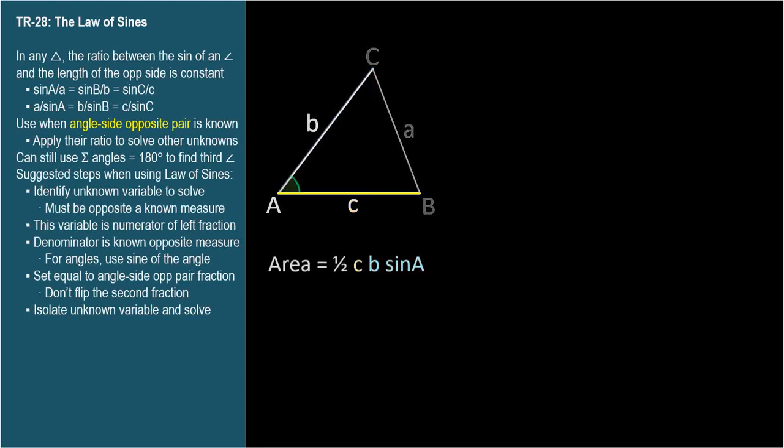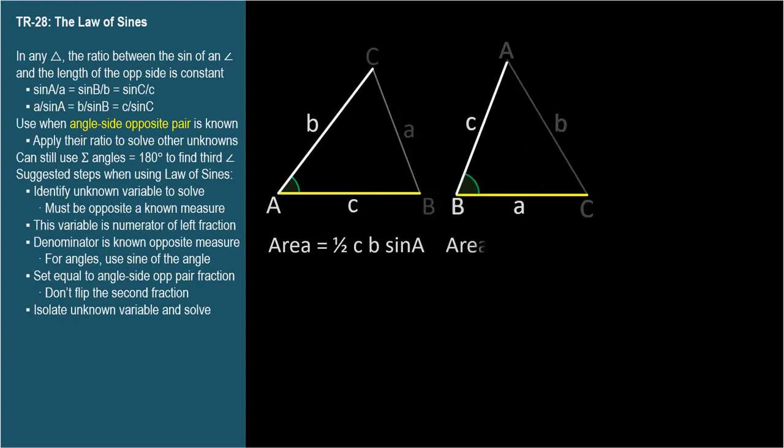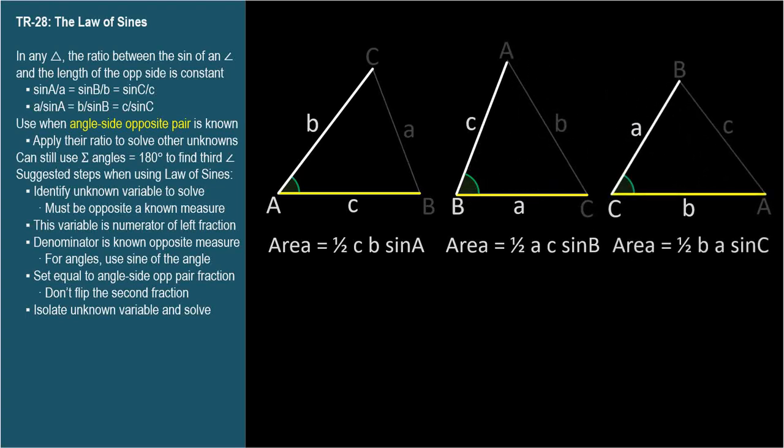The same pattern can be applied to all three vertices. Let's tip the triangle over to the right and find the area. One-half AC sine B. A is the base, and C sine B is the height. One more tip over, and the area is one-half BA sine C.